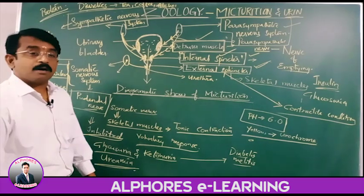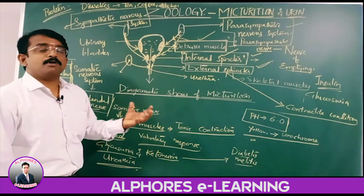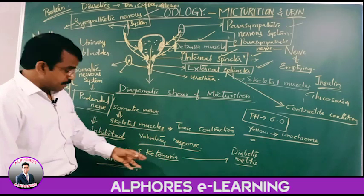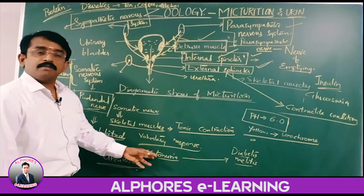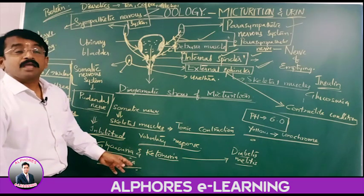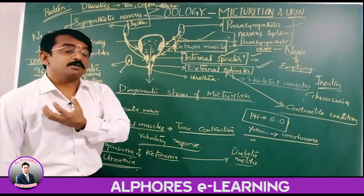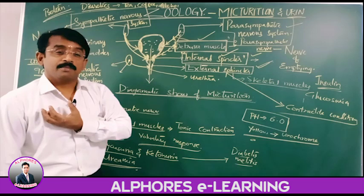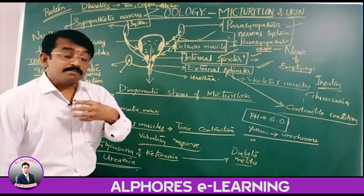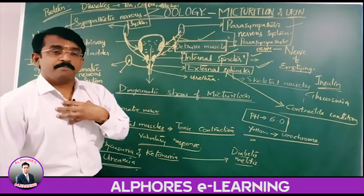If urea levels increase in the blood — not just in the urine — that leads to uremia. If blood is eliminated through the urine, that is hematuria. If albumin increases in the urine, that is albuminuria. If hemoglobin increases, that is hemoglobinuria. These are all abnormalities in the urine.